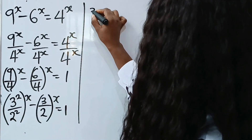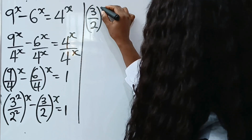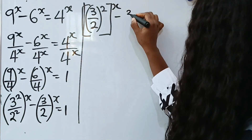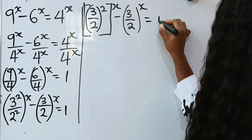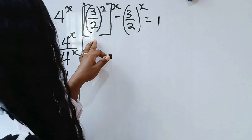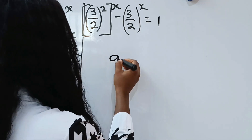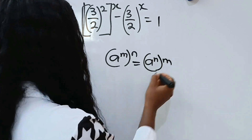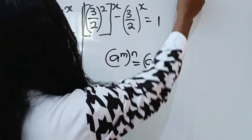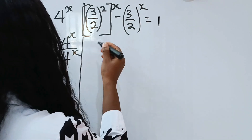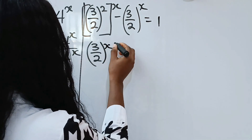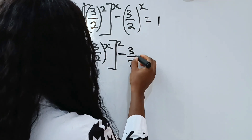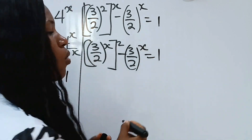So we can rewrite this as 3 divided by 2, raised to the power of 2, everything raised to the power of x, minus 3 divided by 2 raised to the power of x, equals 1. Using the rule that a to the power of m raised to the power of n can be rewritten as a to the power of n raised to the power of m — the positions can be interchanged — we rewrite this as 3 over 2 to the power of x, everything squared, minus 3 over 2 to the power of x, equals 1.